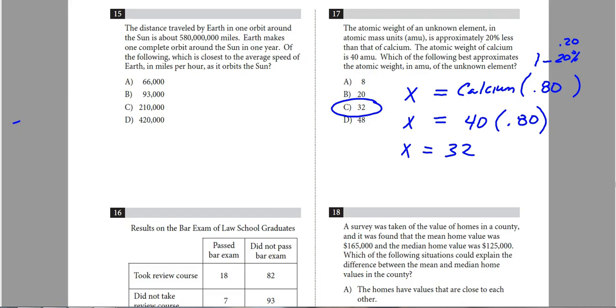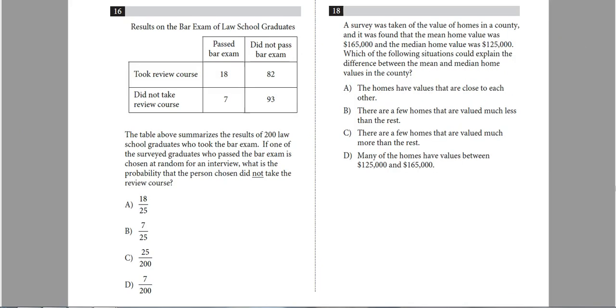A couple different ways you could do it also. You could say, we have our calcium value, and then we're going to take away 20% of the calcium value. So we're going to go 40, take away 8, and we'll get 32. That's another way to kind of do it, if you don't really like the equation route. So there's a couple different ways to tackle that one.